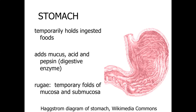The stomach is essentially a sac-like organ involved with temporarily holding ingested food. Because it's a temporary holding structure, in its relaxed state we're going to see a lot of temporary folds of mucosa and submucosa — these temporary folds are referred to as the rugae. As the stomach becomes filled during a meal, it starts to expand and those temporary folds are flattened out.